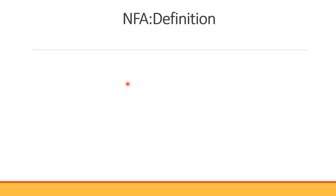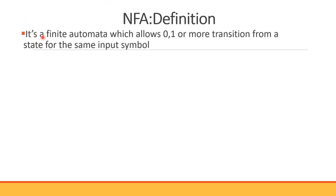So let's start. What is NFA? The key factor to note about NFA is that it is a finite automata which allows zero, one, or more transitions from a state for the same input symbol. In DFA, for every state and every input symbol, there should be a single transition.